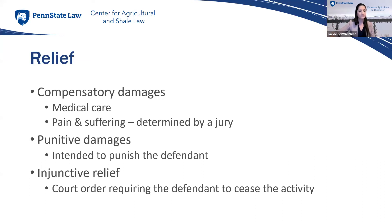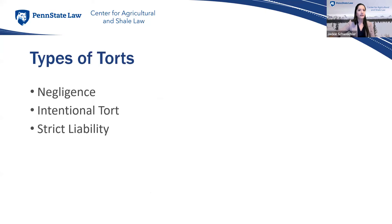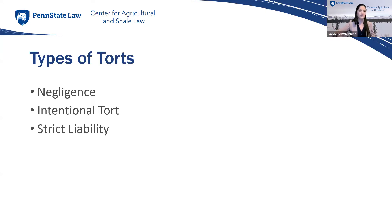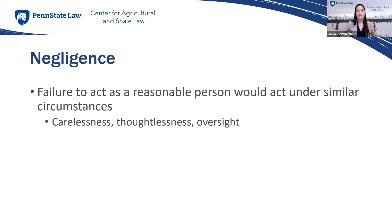There are three main types of torts: negligence, intentional torts, and strict liability. As I go through the next few slides, think about how these concepts apply to your operation. The names don't matter as much as understanding your requirements as a farmer, landowner, and business person — this is just to give you perspective, not to memorize definitions.